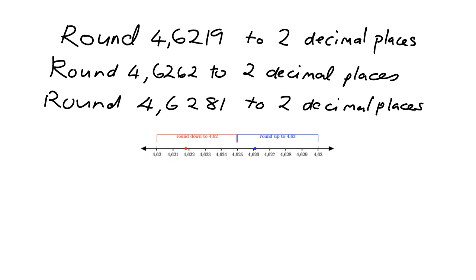If we want to round 4.6219 to two decimal places, we're rounding to the second decimal place. We're talking about 4.62 lying below and 4.63 lying above, with the halfway point at 4.625. When we look immediately to the right of that second decimal place, we see we've got a 1 there. That means we're lying below 4.625, and so we need to round down to 4.62.